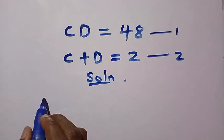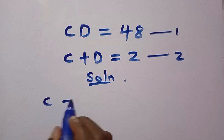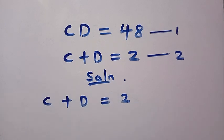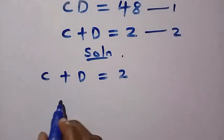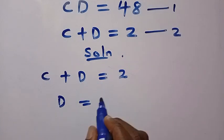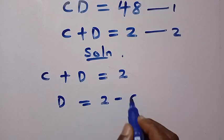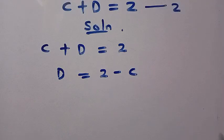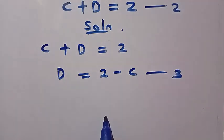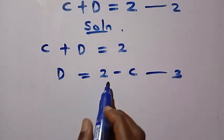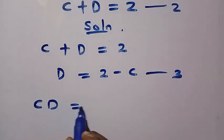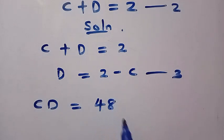Let's consider equation 2. Equation 2 says C plus D equals 2, then let's make D the subject by transferring C to the other side. We have D equals 2 minus C. This is our new equation, we call this equation 3. Then let's substitute this equation 3 into equation 1.